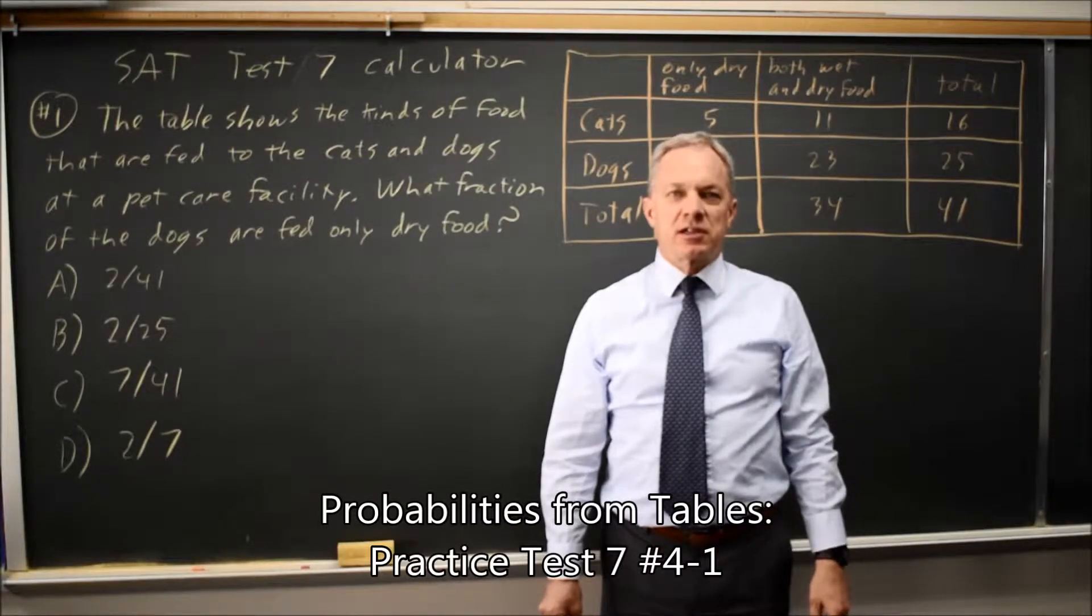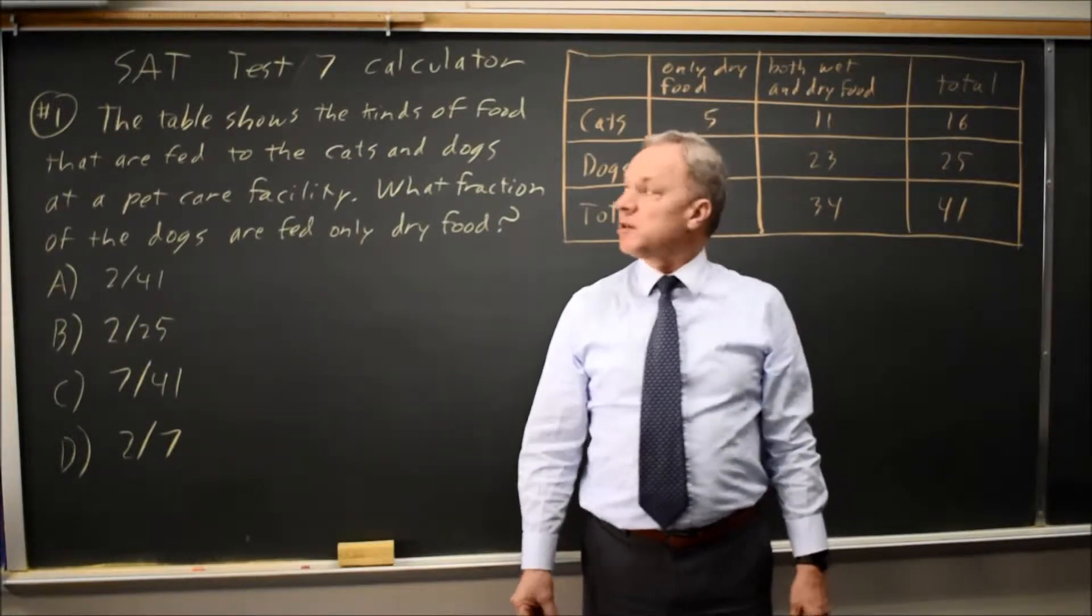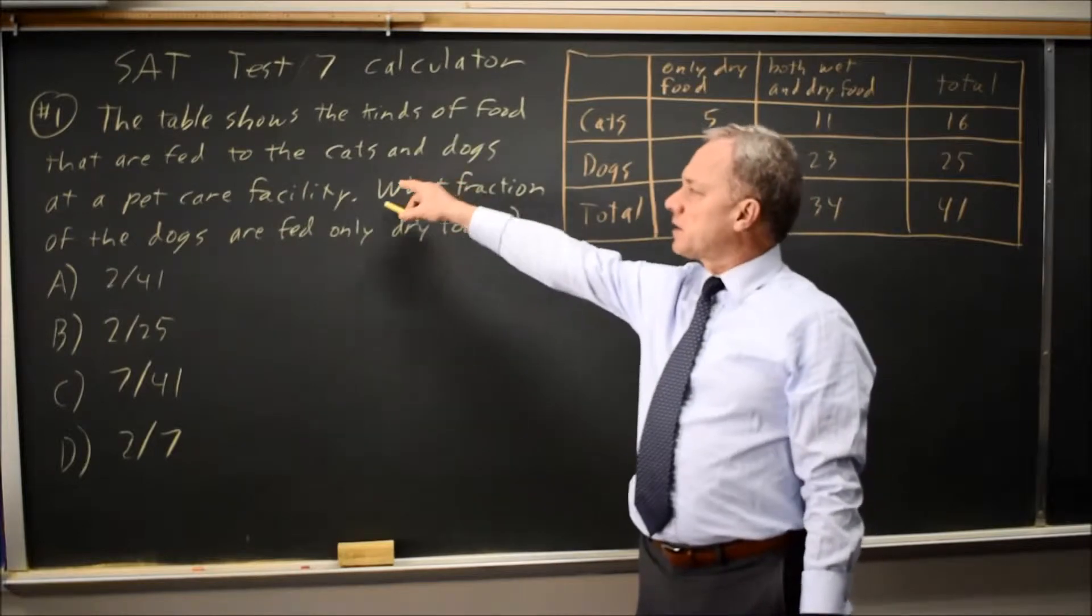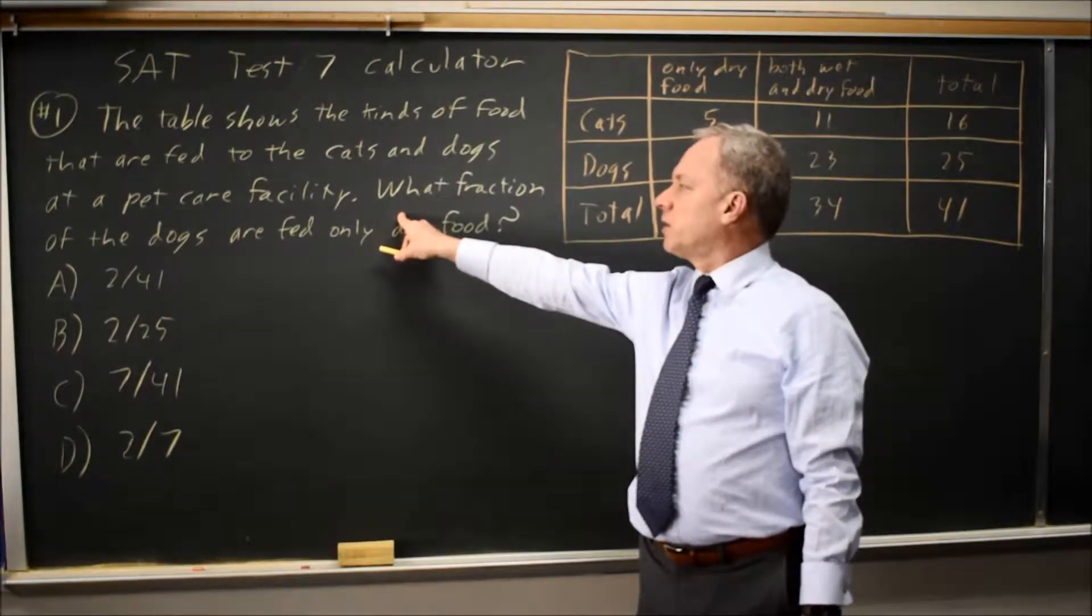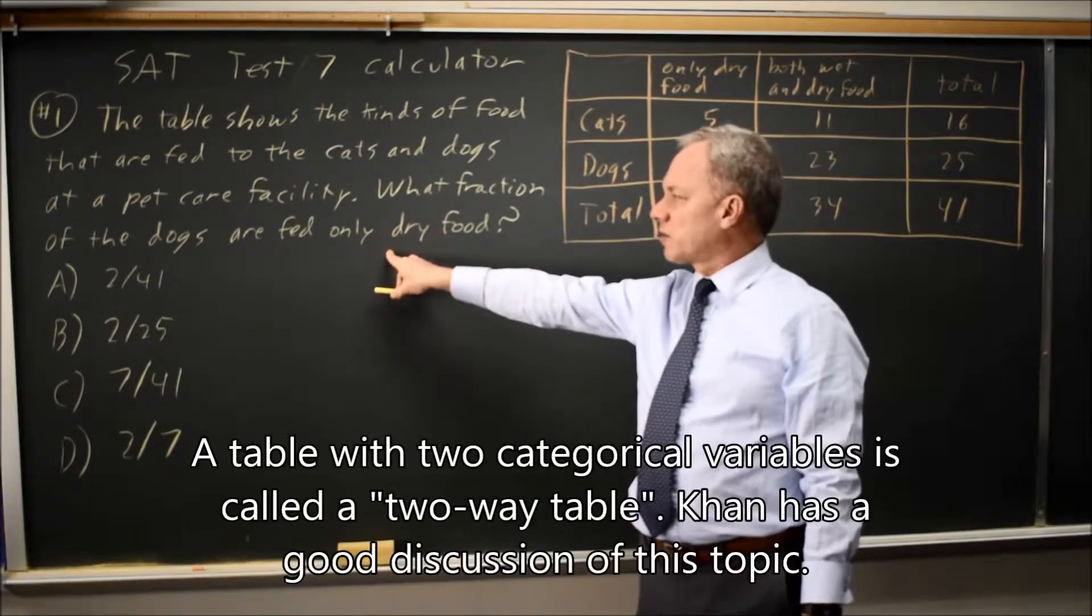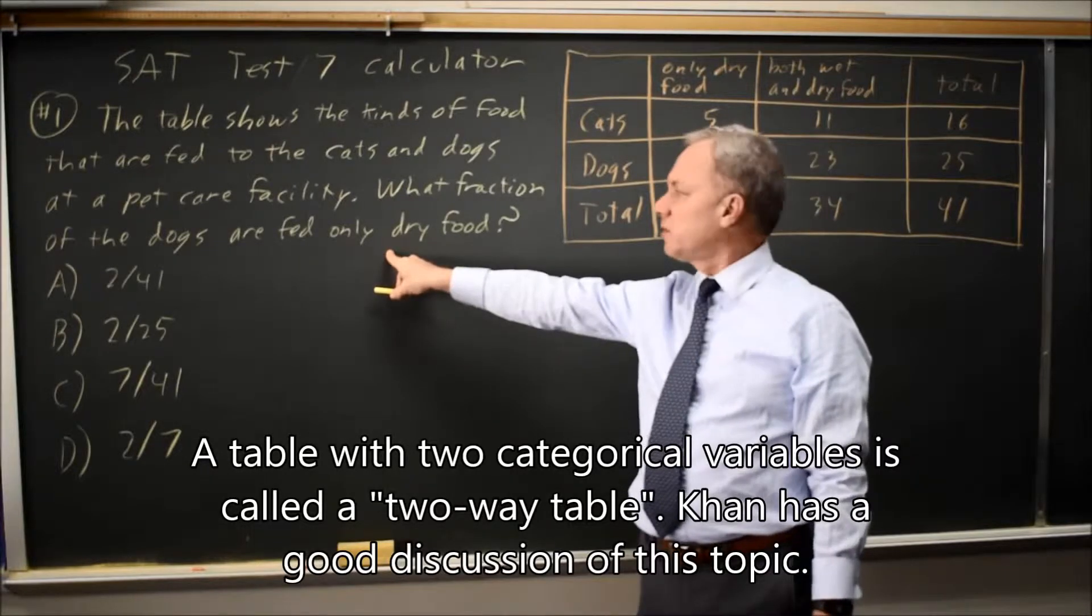This is SAT Test 7, Calculator Question Number 1, asking about the dogs and cats at a pet care facility. And the question is, what fraction of the dogs are fed only dry food?